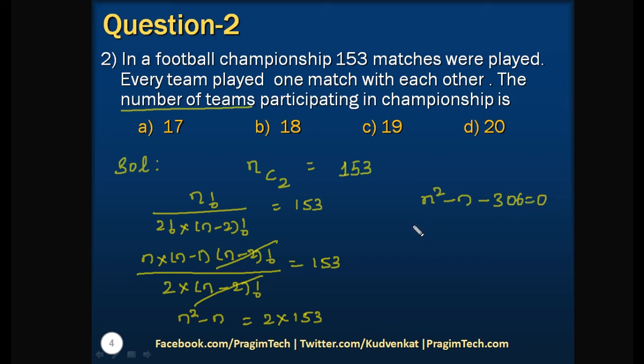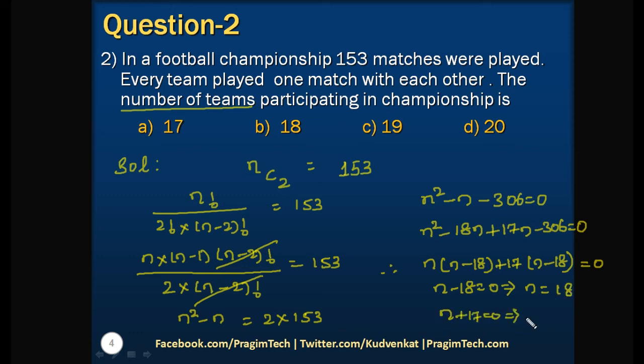In order to find out N value we have to factorize this. So the factors are N squared minus 18N plus 17N minus 306 equals 0. Therefore N into N minus 18 plus 17 into N minus 18 equals 0. Or we can say that N minus 18 equals 0 which implies N equals 18. Or N plus 17 equals 0 which implies N equals minus 17. But number of teams cannot be negative so it will be N equals 18. So the answer is 18.